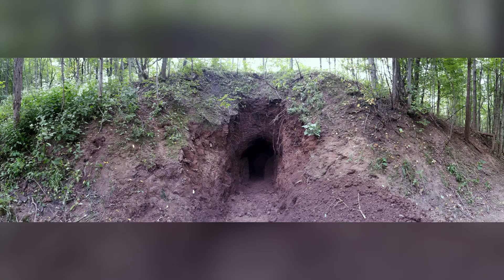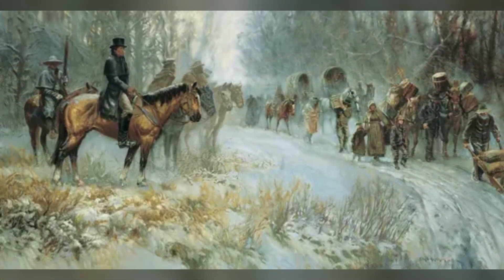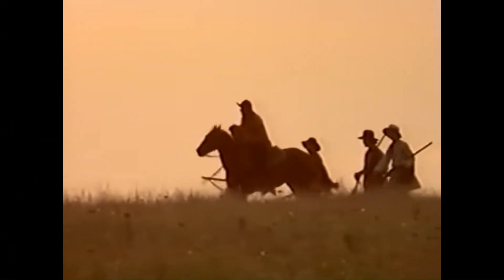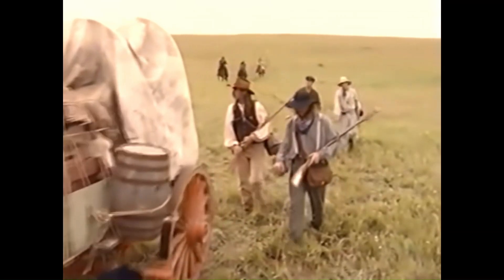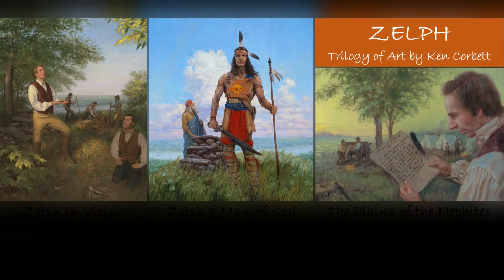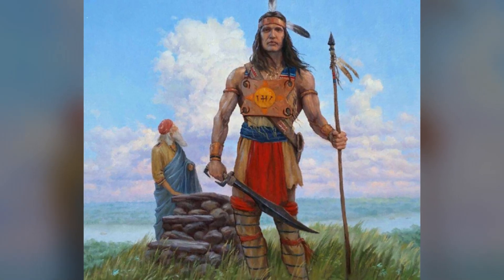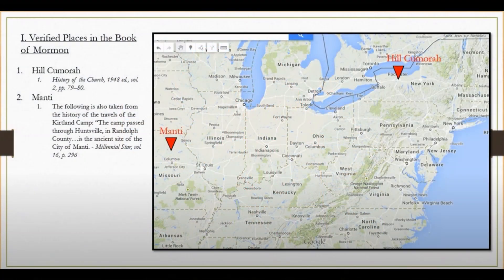Joseph Smith made several direct statements confirming the Book of Mormon's location outside of Latin America. In June 1834, while marching with Zion's Camp to Missouri, Joseph wrote to Emma recounting 'wandering over the plains of the Nephites, picking up their skulls and bones as proof of its divine authenticity.' Apostle Heber C. Kimball stated that Joseph claimed a burial mound revealed a Nephite warrior named Zelf, a former officer who fell in the last destruction among the Lamanites, made known to Joseph in a vision. So we have Hill Cumorah and the land of Zelf both pointing to a Heartland model.